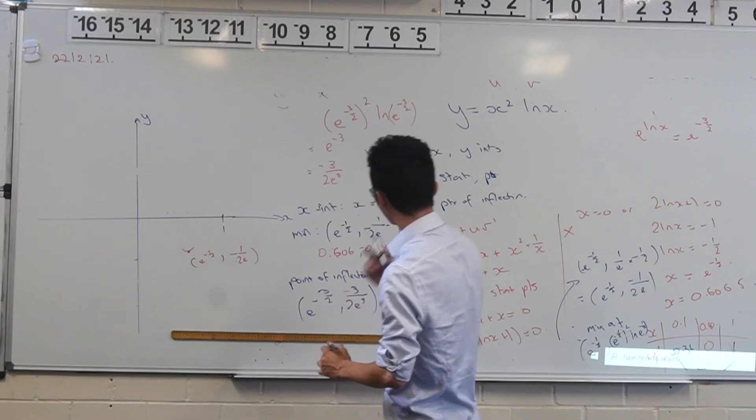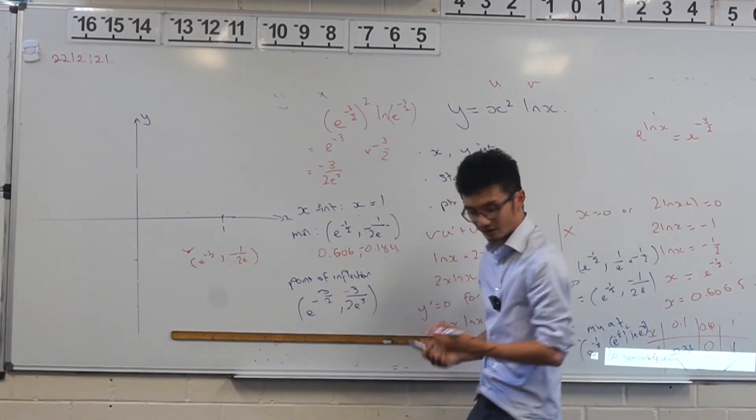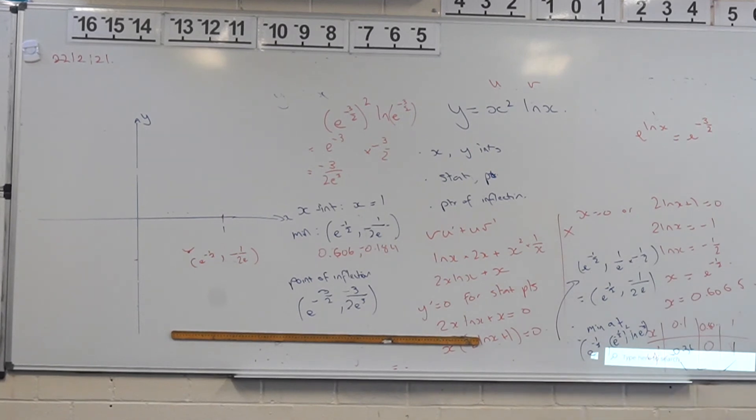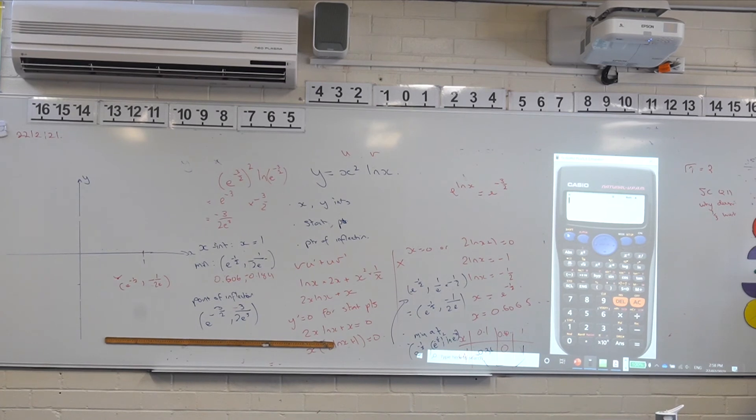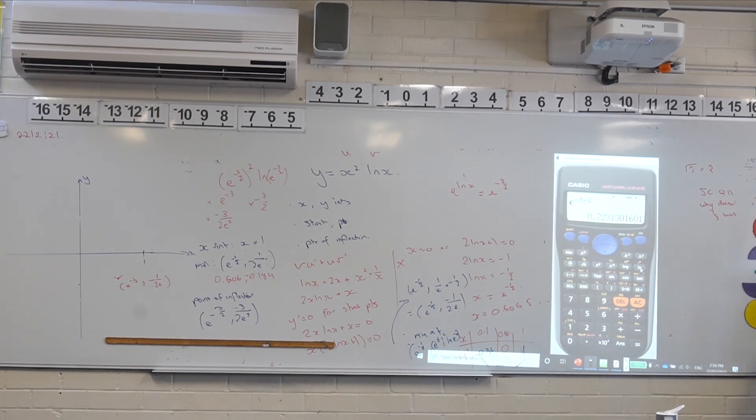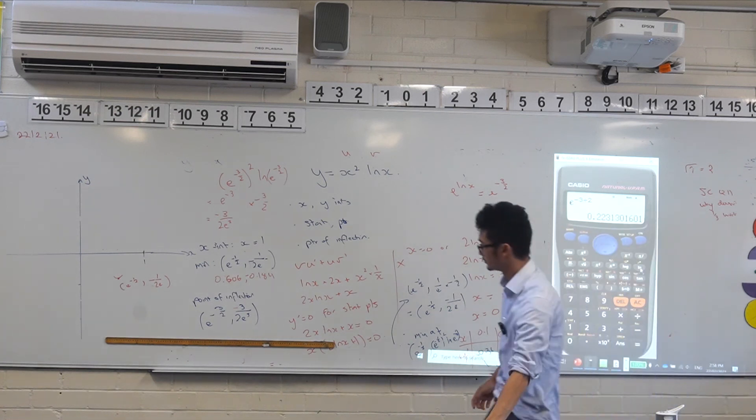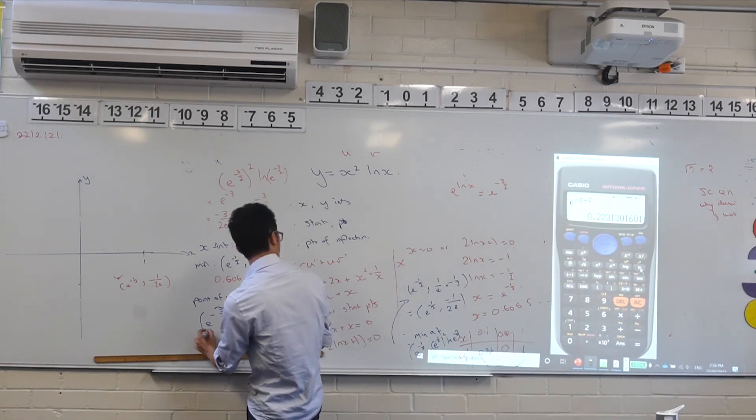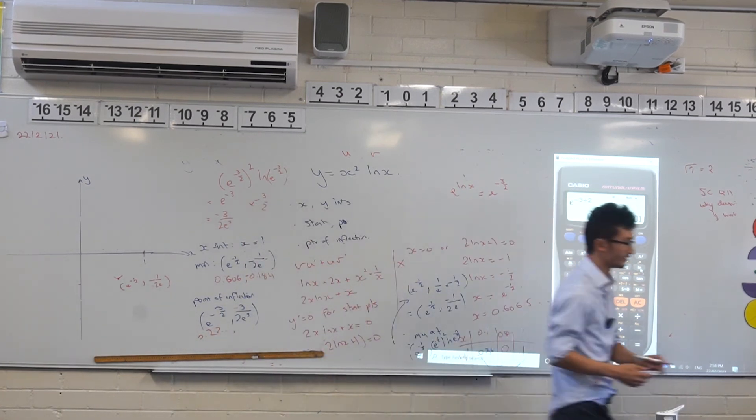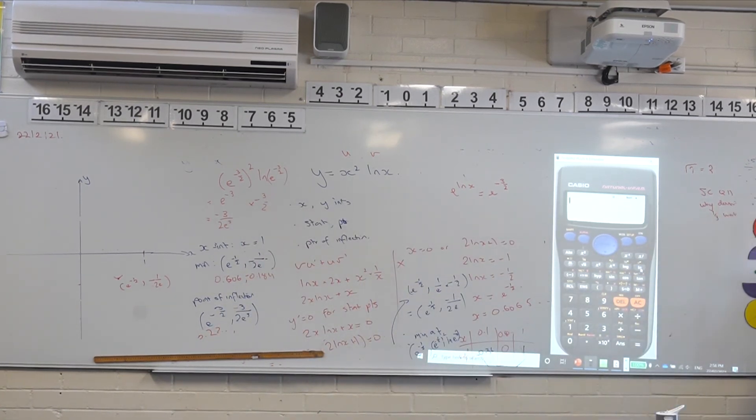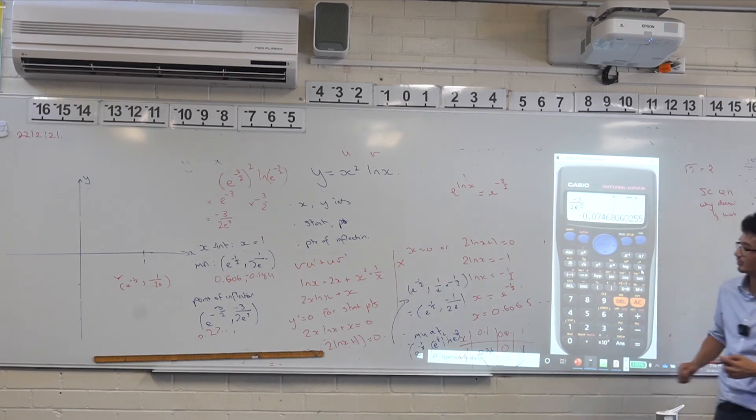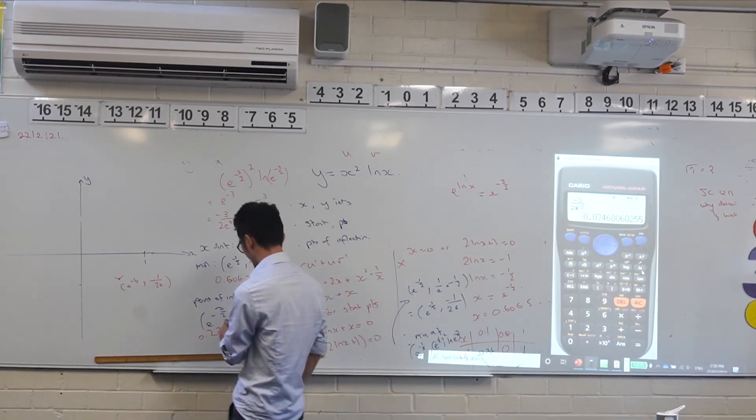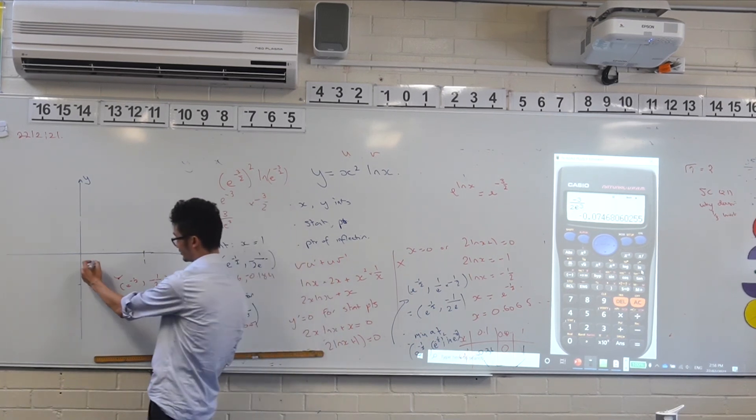And then what else do we know? We know there's a point of inflection, and that's going to occur here. Now, what is that as a numerical value? Let's have a look. So that one is e to the negative 3 over 2. So e to the negative 3 over 2, that's about 0.2 something. And then this one here, negative 3 over 2e cubed. That's negative 0.07. So that's negative 0.07. That's significantly higher, so probably up here more.